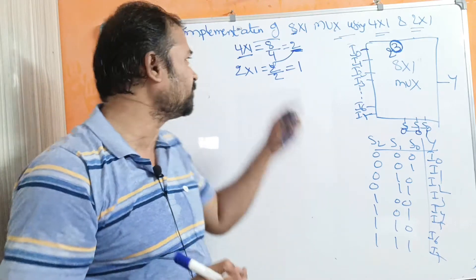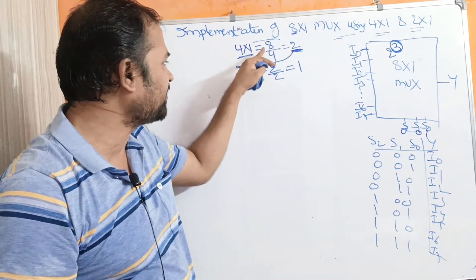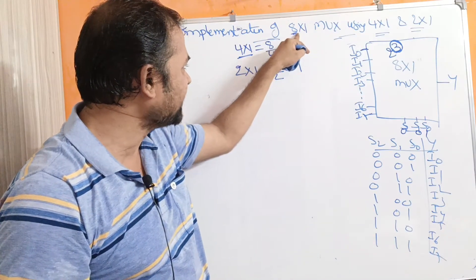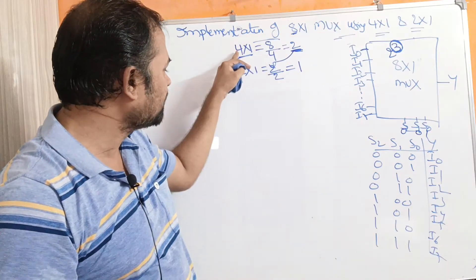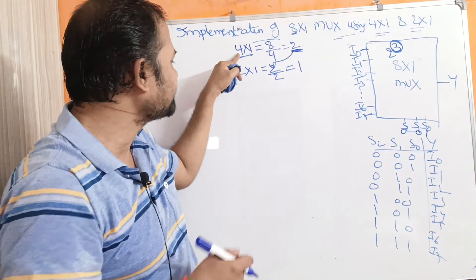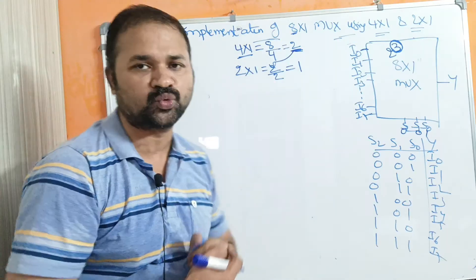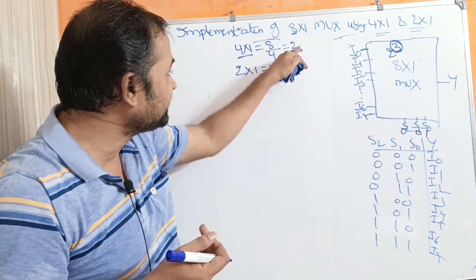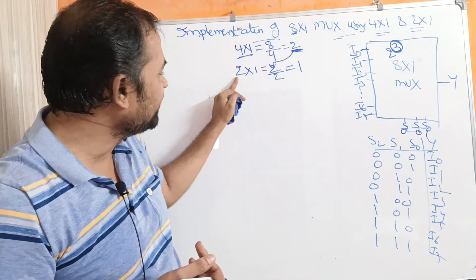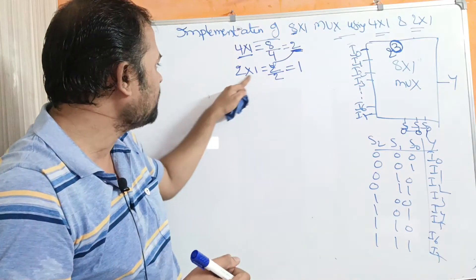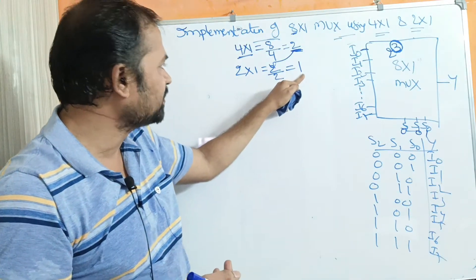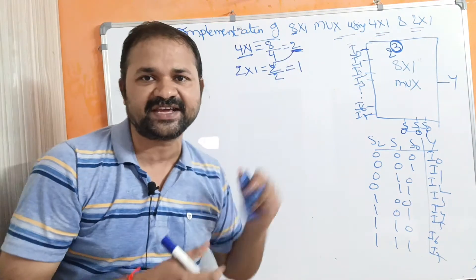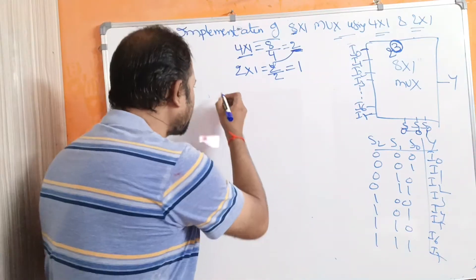The procedure is very simple. The number of 4 by 1 multiplexers required equals 8 divided by 4, which is 2. For the number of 2 by 1 multiplexers, we divide 2 by 2 — since a 2 by 1 multiplexer has 2 data inputs — giving 1. So at the first level we require 2 four-by-1 multiplexers, and at the second level we require 1 two-by-1 multiplexer.